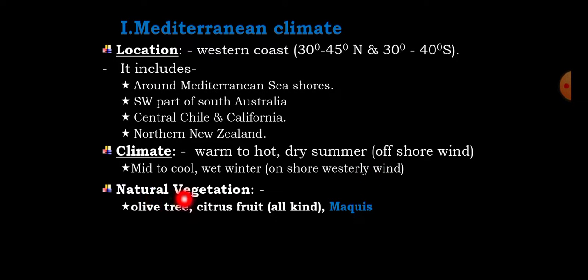Natural vegetation includes olive trees and citrus fruits. These are found in Macchia forests.